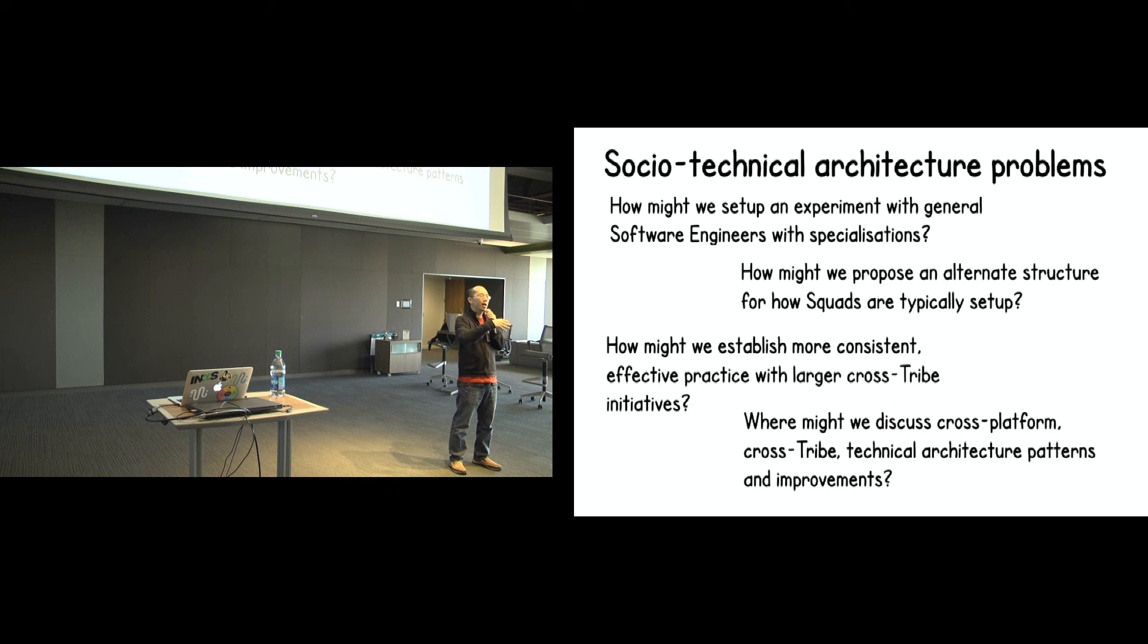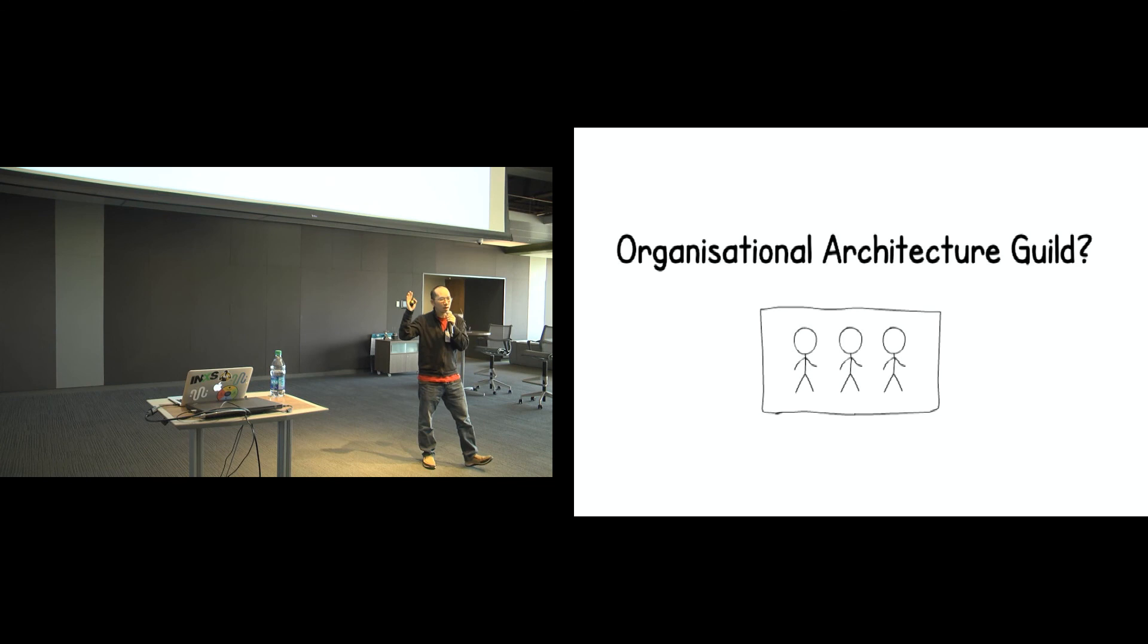How might we propose an alternate structure for how squads are typically set up? How would we establish more consistent effective practice with larger cross-tribe initiatives? Where could we discuss cross-platform, cross-tribe technical architecture patterns and improvements? If there is a better way to build something, but at a larger scale, how would you do that? Like currently, our product still, it is a reflection of how our organization's structure. What if we kind of look at the technology and saying, wait a minute, this doesn't really work. We probably want to build it differently, and therefore, the implication is we might want to structure ourselves differently. How do you even have that discussion? Right now, it is somewhat ad hoc. You so happen to know someone and you kind of do this informal thing. This becomes more and more difficult the larger we are. I'm loathe to suggest some kind of enterprise architecture group, but something like this. Not formally some kind of architecture group, but informally, people who are interested in problems at this scale. It's more who wants to get involved in this sort of thing and how we might set this up. I'm planning to try something like this, at least in my local mission, and then we'll see how that plays out.